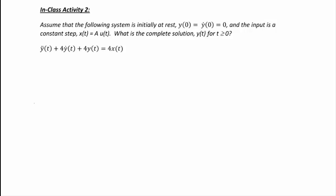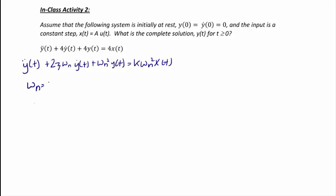For the final example, assume the system is initially at rest: y of zero equals y-dot of zero equals zero, and the input is a constant step x of t equals a u of t. The system equation is y-double-dot of t plus 4 y-dot of t plus 4 y of t equals 4 x of t. Comparing coefficients with the standard form gives omega_n equals 2 radians per second, k equals 1, and zeta equals 1. Since zeta equals one, we have a critically damped response.